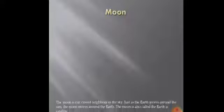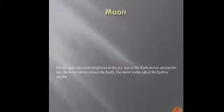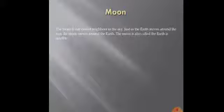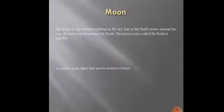The moon is our closest neighbor in the sky. Just as the earth moves around the sun, the moon moves around the earth. The moon is also called the earth's satellite.